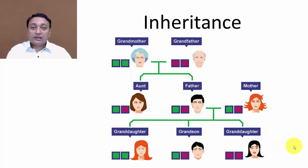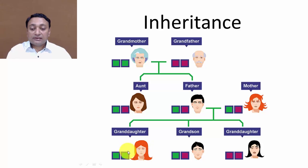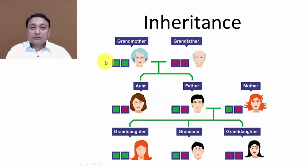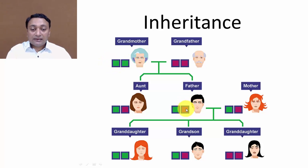As we all know, humans get some physical or genetic properties through heredity. For example, this lady is getting left green properties from her father, and her father got the same property from his mother. So this left green property is inherited by her child, and the same property is inherited to the grandchild as well.